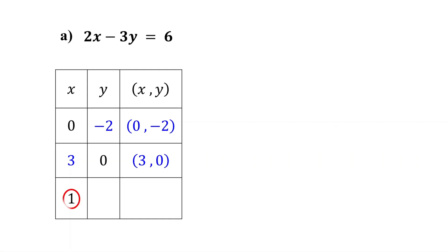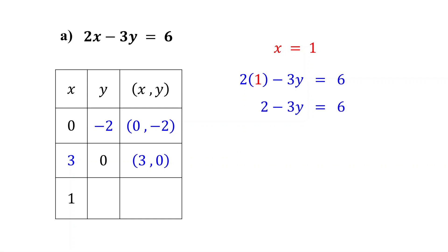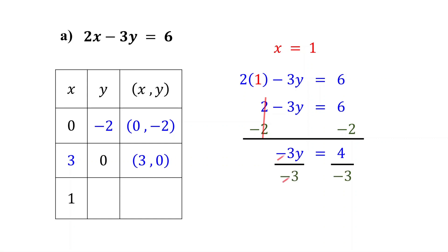Next, the value of x is given as one, so substitute one for x and solve for y. Two times one is two. Subtract two from both sides of the equation. These cancel out and six minus two equals four. Then, if we divide both sides by negative three, we find that y equals negative four thirds. Fill in negative four thirds for y in the table. So the ordered pair (1, -4/3) is another solution to the equation.